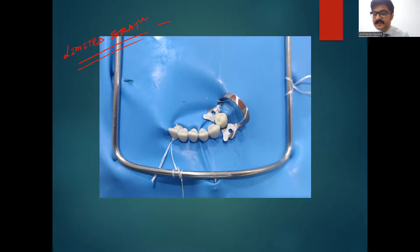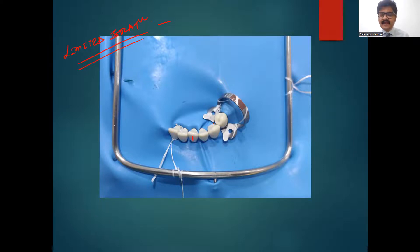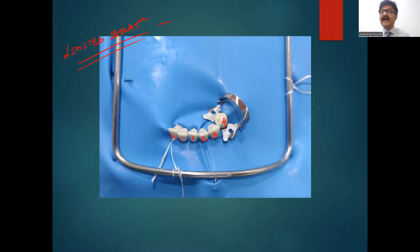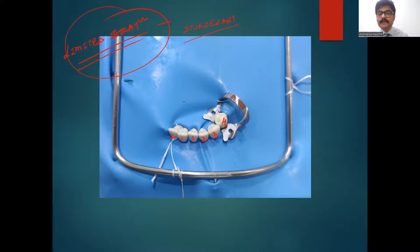Let us look at this classic example. I'm performing restorative procedures on the central incisor of the third quadrant, lateral, and canine. According to limited isolation, I would isolate at least one tooth posterior — that's my first premolar, number four — and two teeth anterior to the tooth being operated on — that's the fourth quadrant central and lateral. So this is satisfactory, according to the limited isolation guidelines from Student.